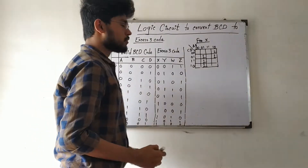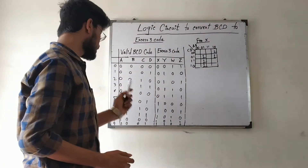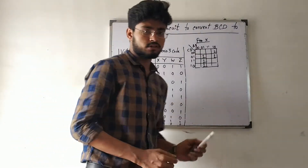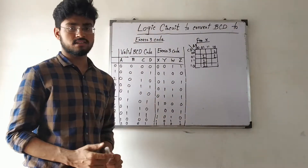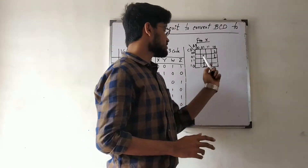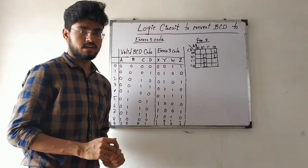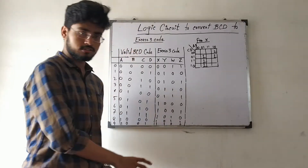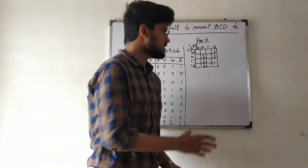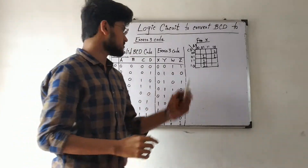We also need to consider that from 10 to 16, there are no valid BCD codes — these are invalid BCD inputs. So we have to treat those as don't-care conditions in our K-map. We mark those cells with an X (don't-care).